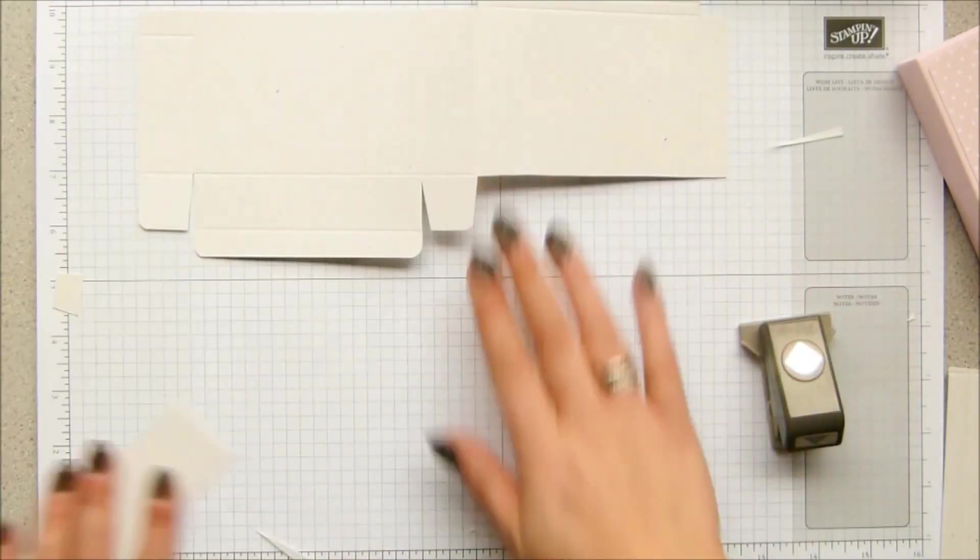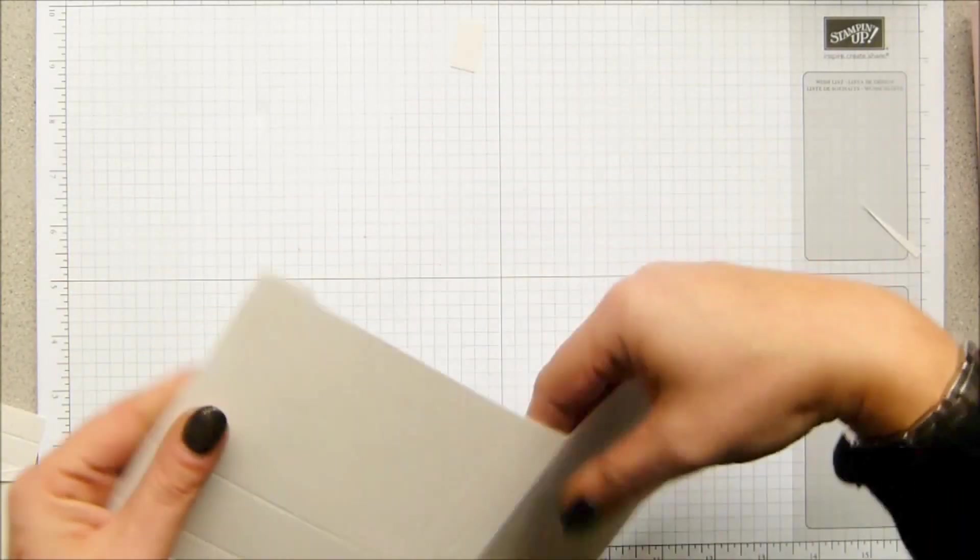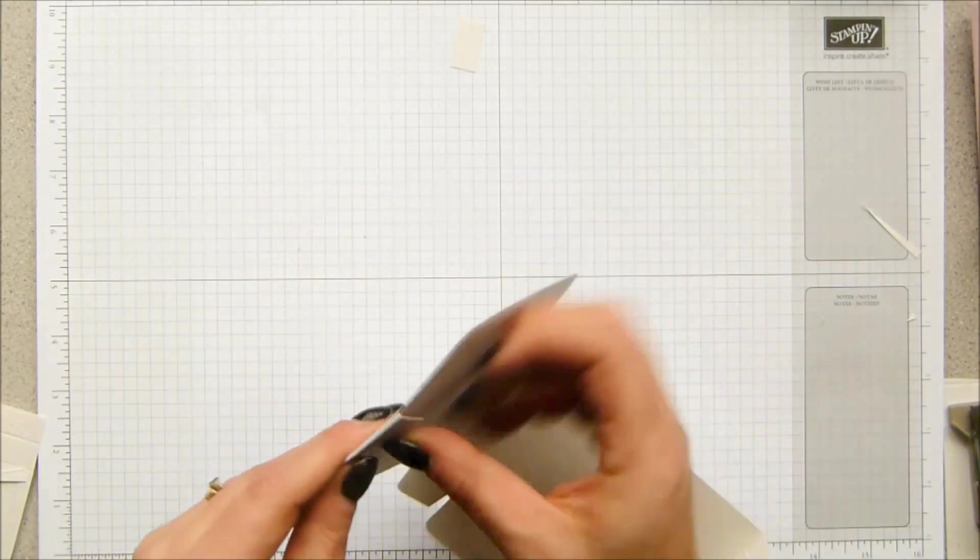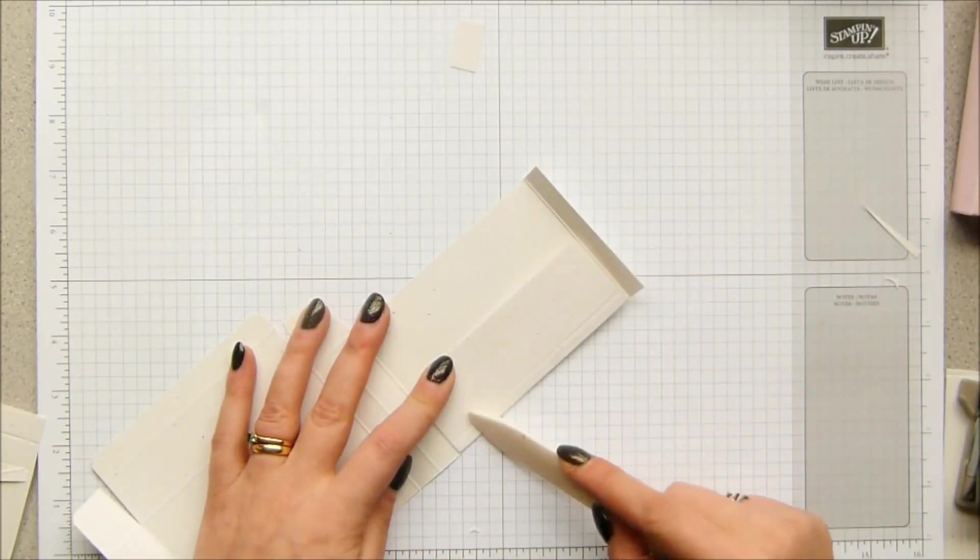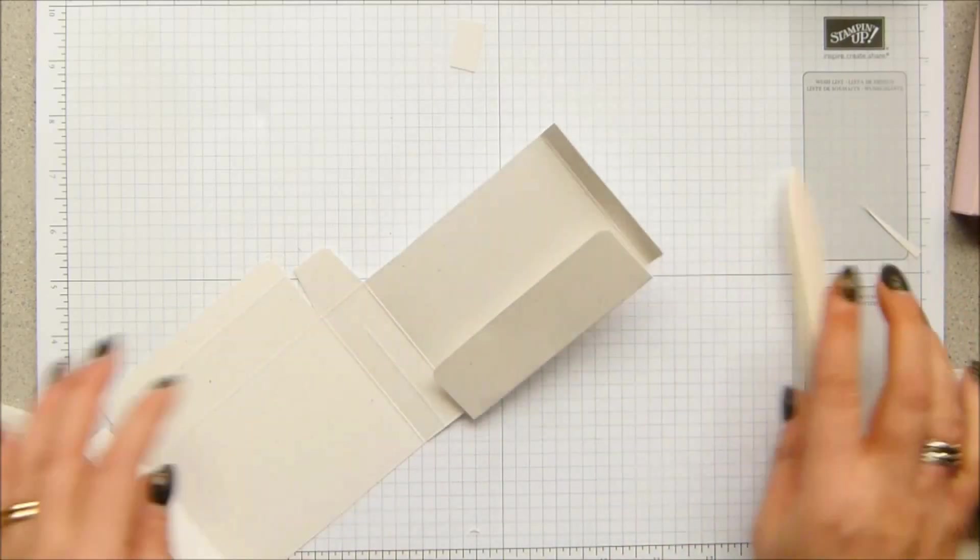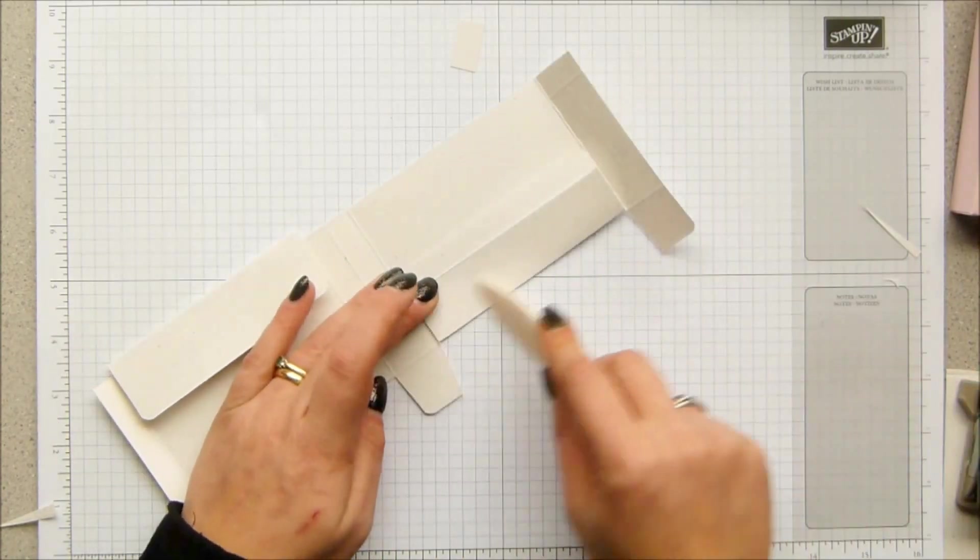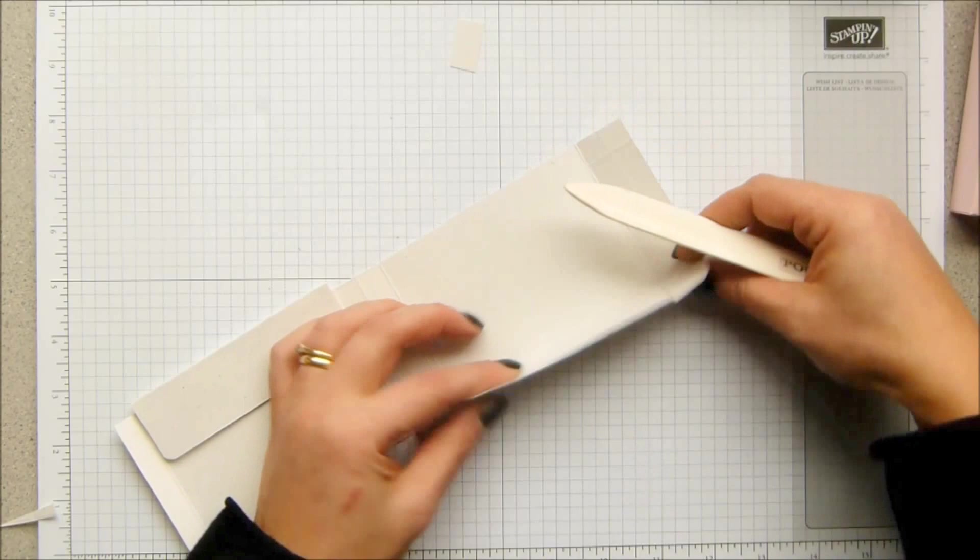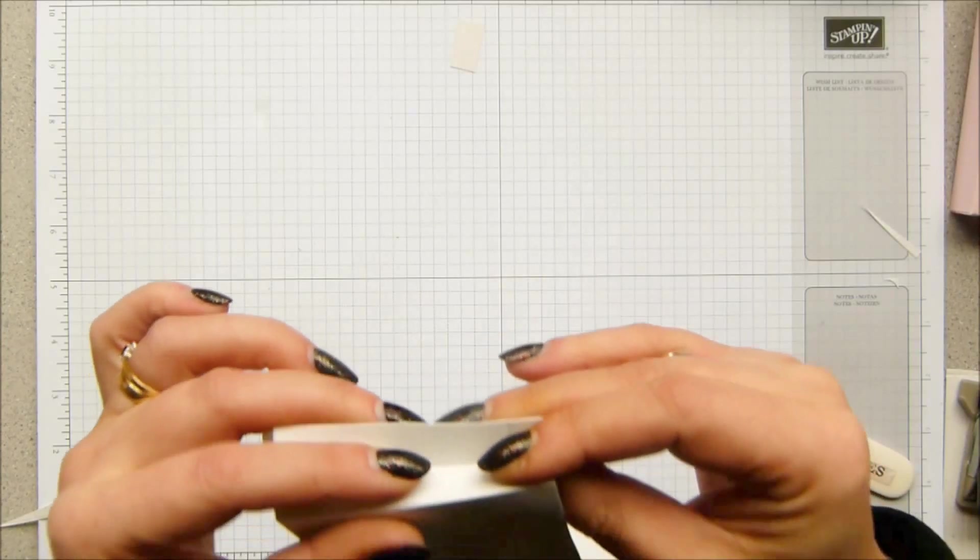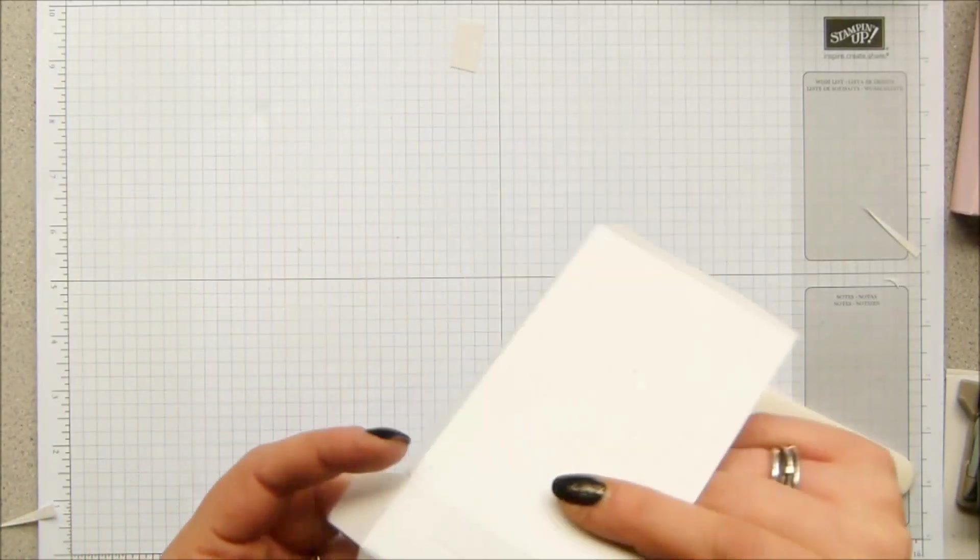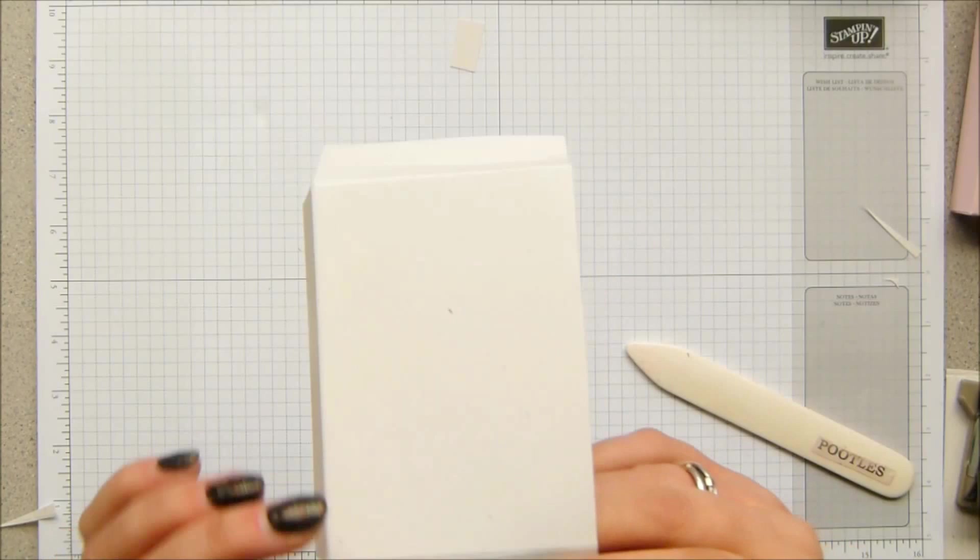Fold your score lines—ignore these half ones for the minute. Fold and burnish all of those. And then these half score lines we want to fold them in the opposite direction, so they're mountain and valley folds. If you've got the folds going like that, you want this one to go in the opposite direction.